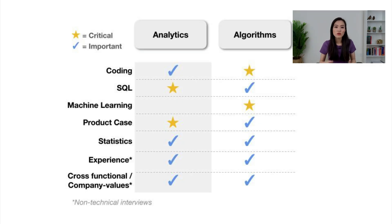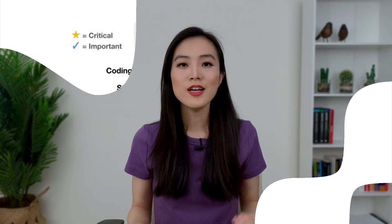That covers all six types of interviews. All resources I mentioned are organized in the description below. Remember, the type of position you target affects which interviews to focus on. For analytics-driven roles, prioritize the product case and SQL interviews. For algorithm-driven roles, focus more on coding and machine learning. The probability and statistics interview and the behavioral and experience interview are important for both tracks. At this point you may be feeling overwhelmed — there is still a lot of interview preparation to do.